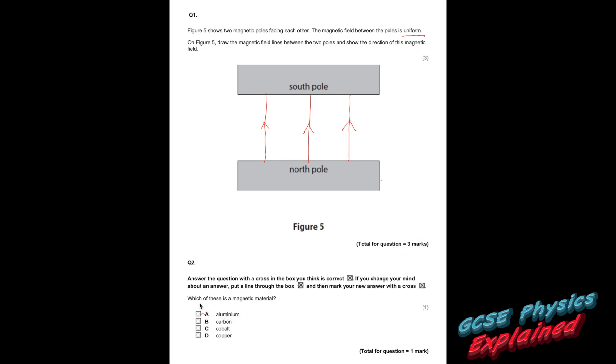Question 2. Which of these is a magnetic material? Aluminum, carbon, cobalt or copper? It's cobalt. So the magnetic materials are cobalt, nickel, iron and steel.